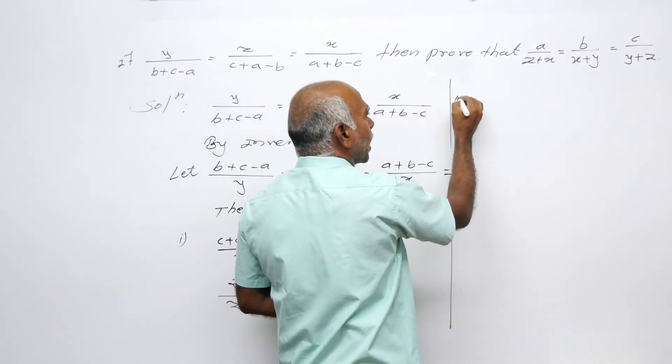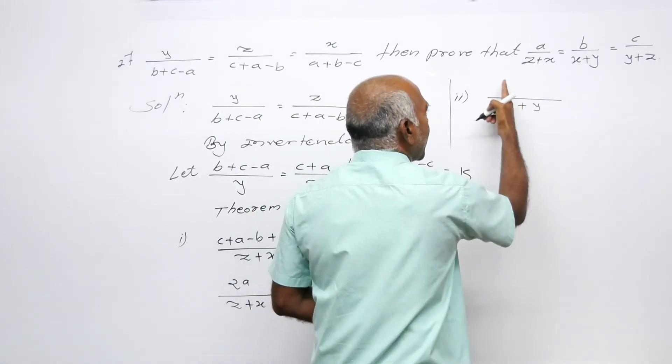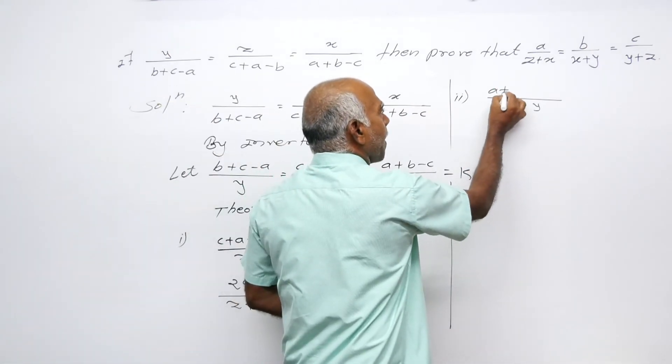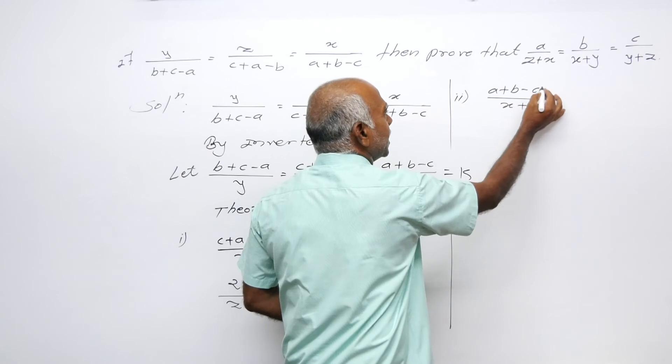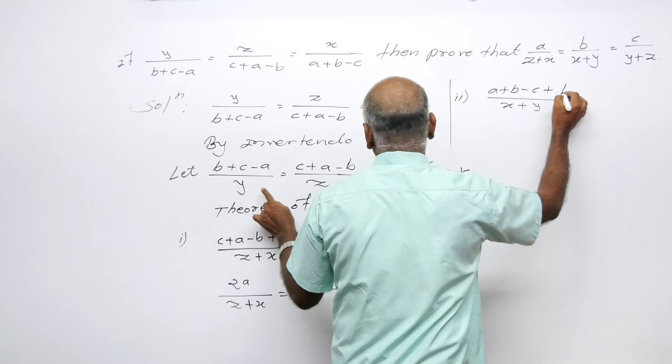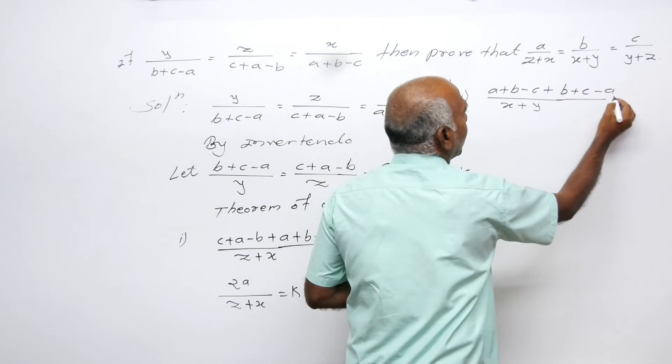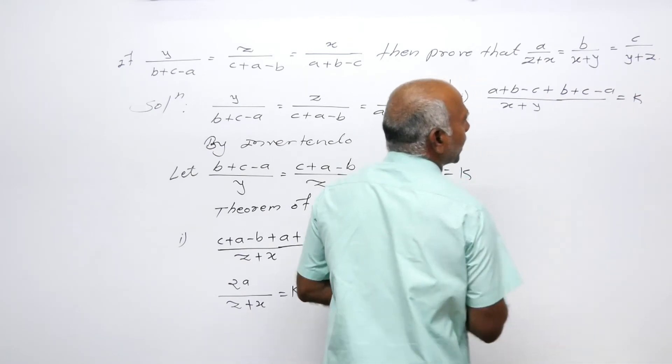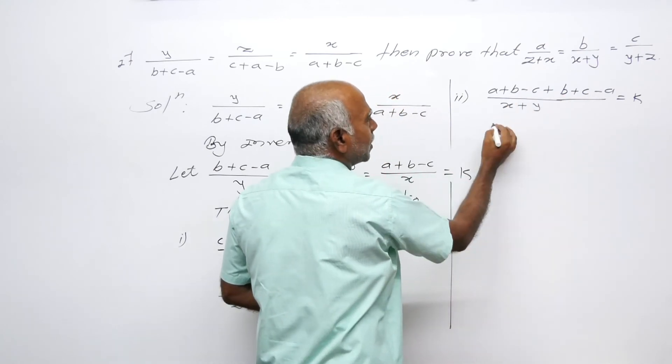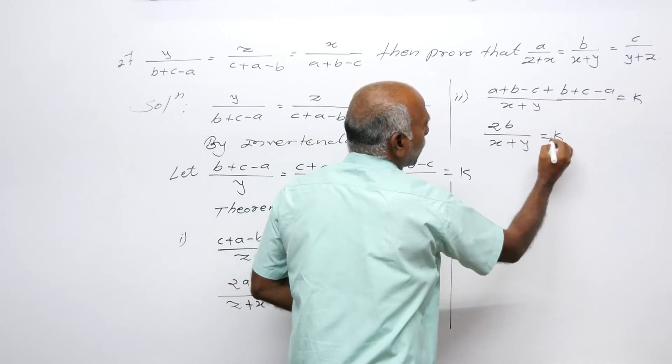For the second ratio, x plus y equals k. x is equal to A plus B minus C plus y value is B plus C minus A. This equals 2B upon x plus y equals k.